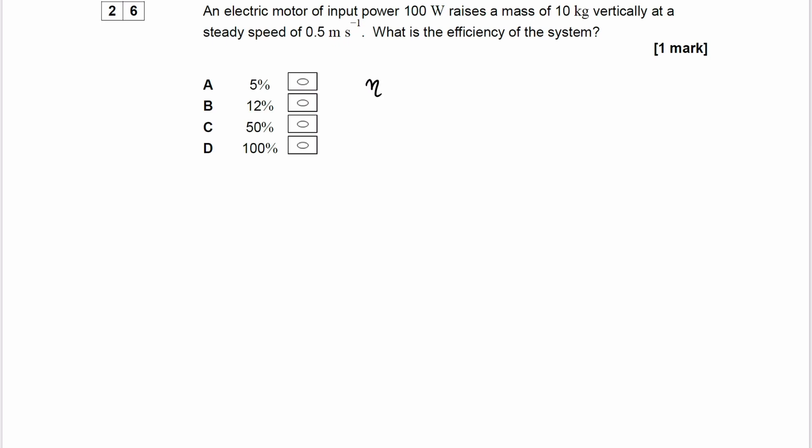So let's write that out. So this is a symbol that you can use for efficiency. So that's equal to useful power output over total power input. And again, these two could be replaced with energy as well. So the power input in this case is what we're given. We're getting electrical power coming into our system. So we know our denominator is equal to 100.